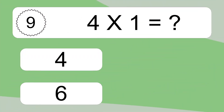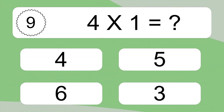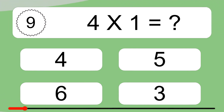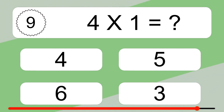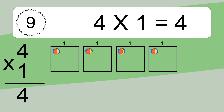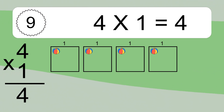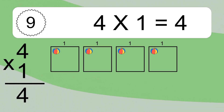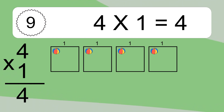4 times 1 equals what? 4 times 1 equals 4. We have 4 boxes, and each box has 1 colorful ball inside. If you count all the balls in all the boxes together, you will have 4 times 1 balls. This equals 4 balls.